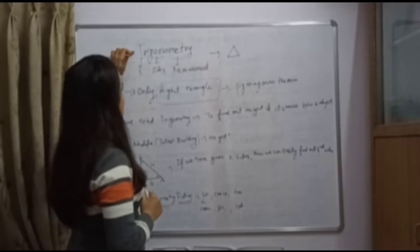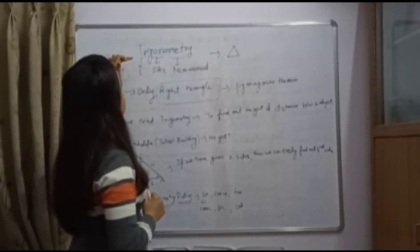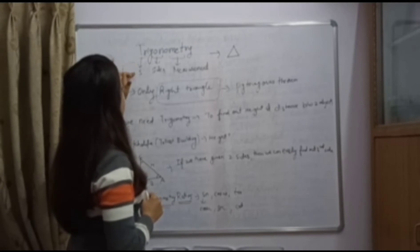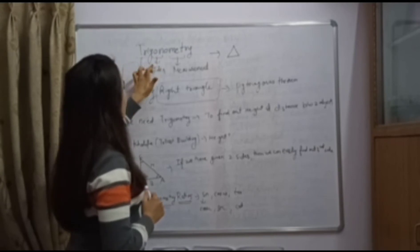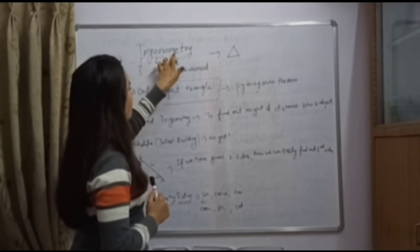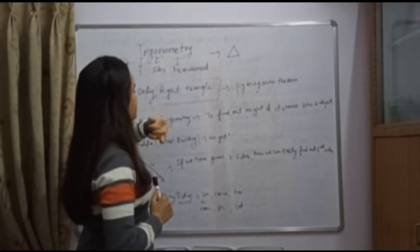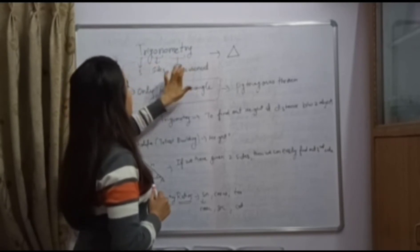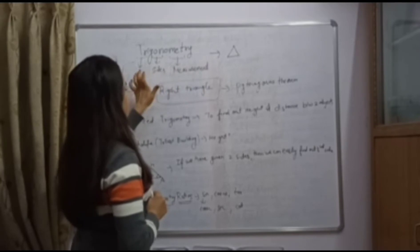Trigonometry is a Greek word. It means 'tri' means three, 'gon' means sides, and 'metry' means measurement. So, measurement of three sides.